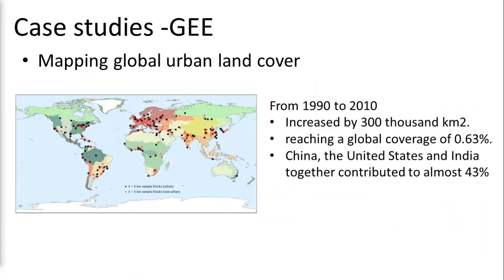In this slide I have included some case studies done using Google Earth Engine. The first one is mapping global urban land cover. In 2018, the Google Earth Engine platform was used to map global urban land cover using high-resolution multispectral Landsat images. The results indicated that the world's urban land area had increased by around 300,000 square kilometers between 1990 and 2010, reaching a global coverage of 0.63 percent. Interestingly, China, the United States, and India together contributed to almost 43 percent of the total increase in global urban land cover. I have included the link in the description below so you can read this case study.